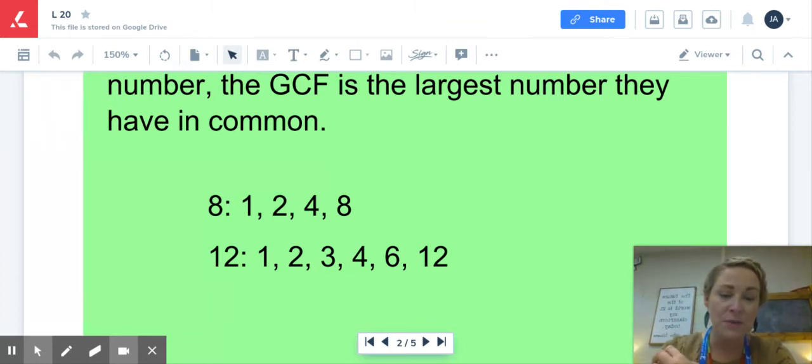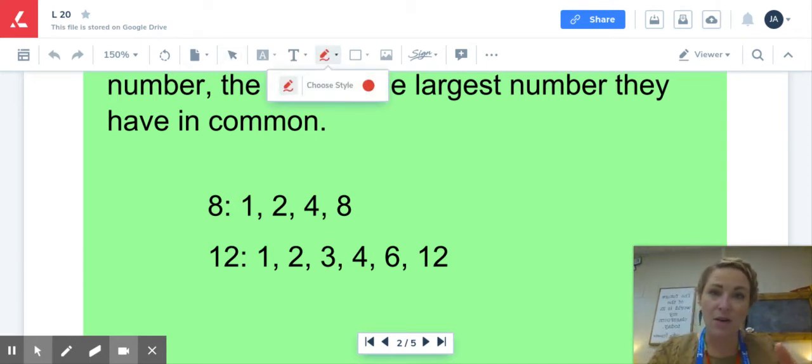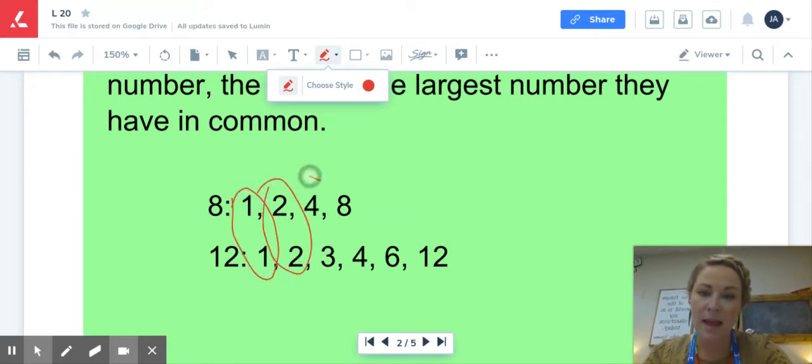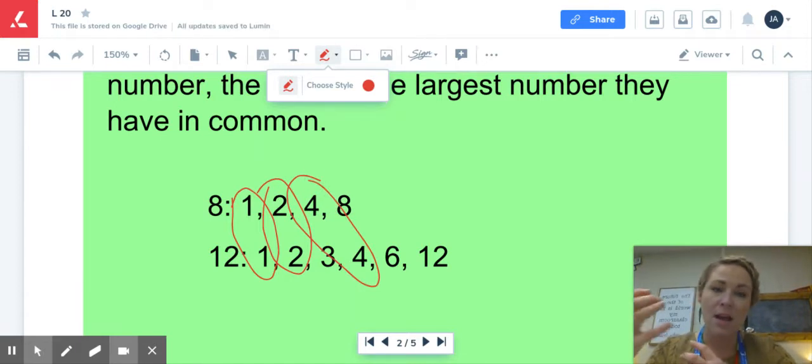Finding the GCF of two numbers means you're taking the time to look at two numbers, finding all of the factors that they have, and then once you find the factors of each number, just stopping and looking at this list and identifying which is the greatest or the largest common factor that they have. Some people, what they like to do is actually circle all of the factors in common.